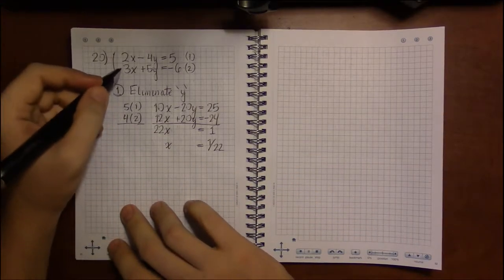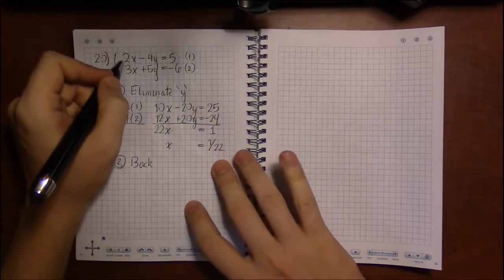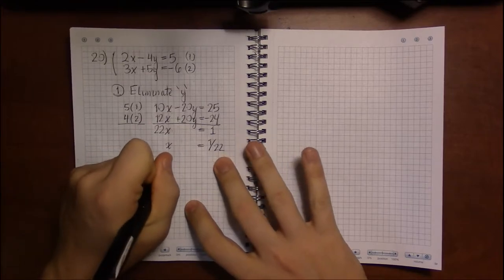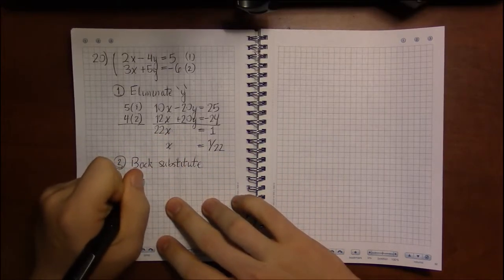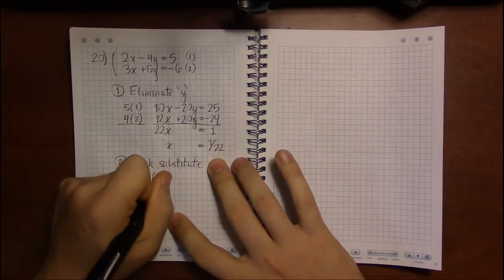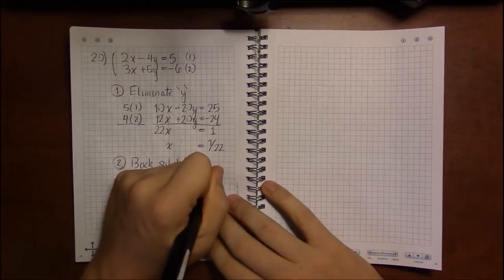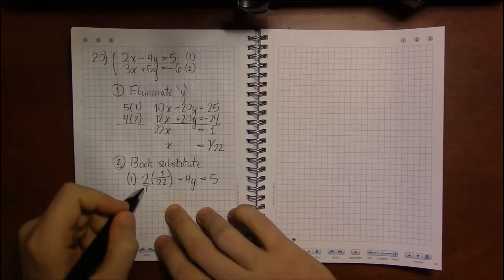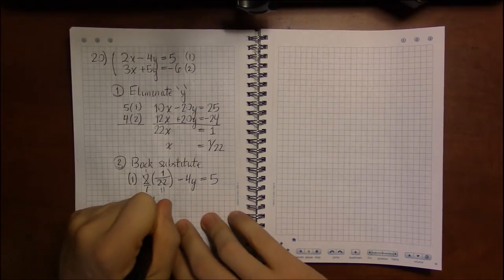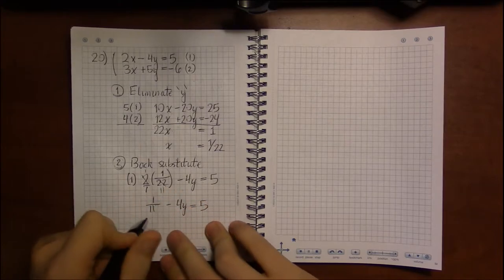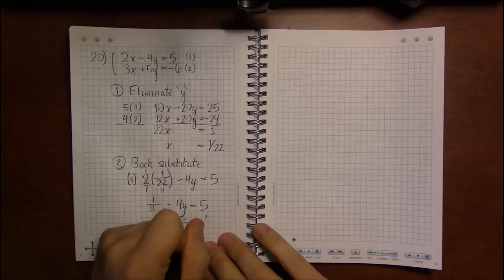Now let's back substitute. I think using equation 1 this time might be a little bit simpler because I can do a bit of cancellation with the 2 and the 22. So in equation 1, we'll have 2 times 1 over 22 minus 4y equals 5. Now this will be—I can write 2 as 2 over 1. 2 goes into 22 eleven times. So this becomes 1 over 11 minus 4y equals 5.